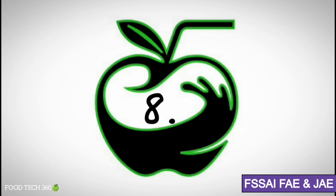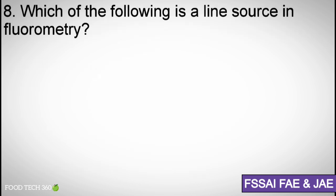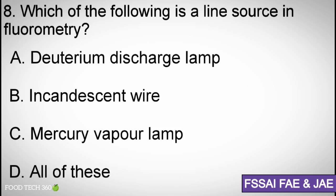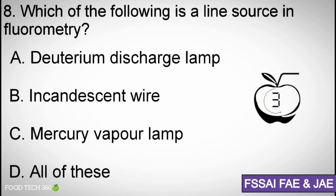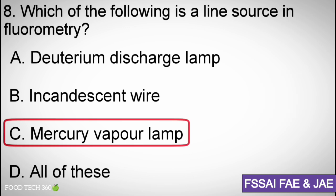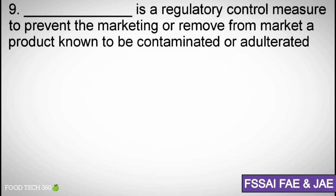Question number eight: Which of the following is a line source of fluorometry? Options: (a) deuterium discharge lamp, (b) incandescent wire, (c) mercury vapor lamp, (d) all of these. Correct answer: (c) mercury vapor lamp.